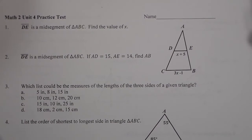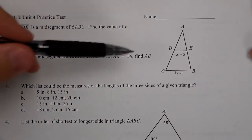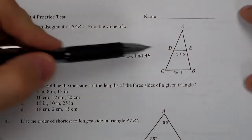This is the Math 2 unit 4 practice test coincides to chapter 4 from our book. So in the first question we have DE as the midsegment of ABC. We need to find the value of X. So I'm going to take these two values and use them to solve.